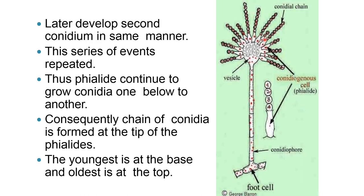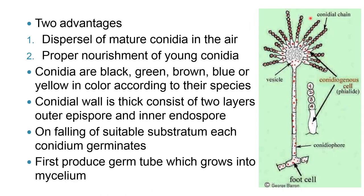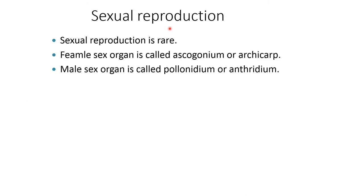Later, the second conidium develops in the same manner. This series of events is repeated, so the phialide continues to grow conidia one below another. A sequential chain of conidia is formed at the tip of the phialides. The youngest is at the base and the oldest is at the top. The two advantages are dispersal of mature conidia in the air and proper nourishment of young conidia. Conidia are black, green, brown, blue, or yellow in color according to their species. The conidial wall is thick and consists of two layers: outer epispore and inner endospore. On falling on a suitable substratum, each conidium germinates to first produce a germ tube, which grows into a mycelium.